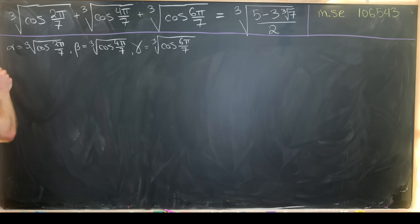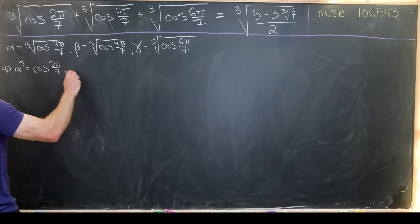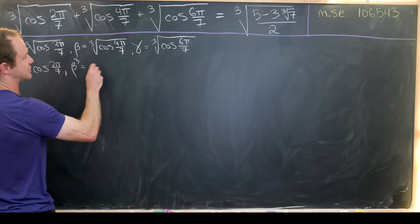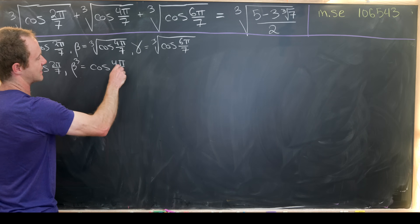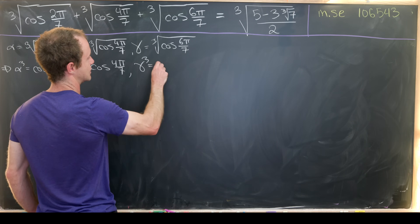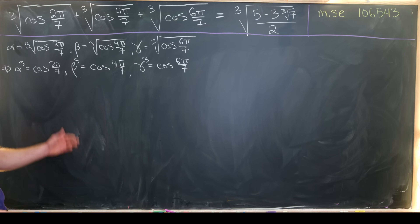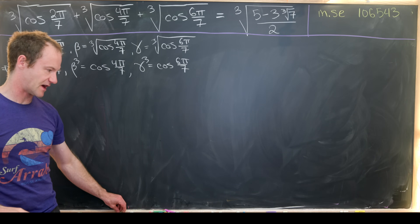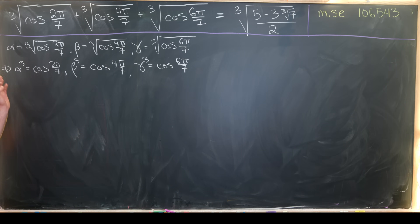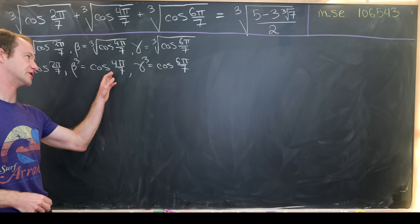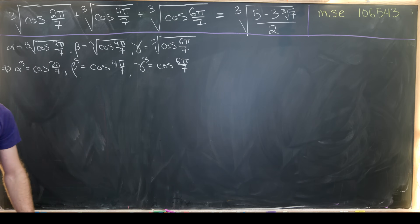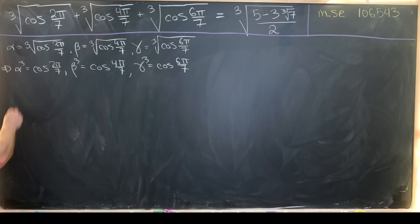Notice that α³ = cos(2π/7), β³ = cos(4π/7), and γ³ = cos(6π/7). From here, what we'd like to do is find a minimal polynomial for cos(2π/7), which will also be the minimal polynomial for cos(4π/7) and cos(6π/7). I'll leave verifying that as an exercise.